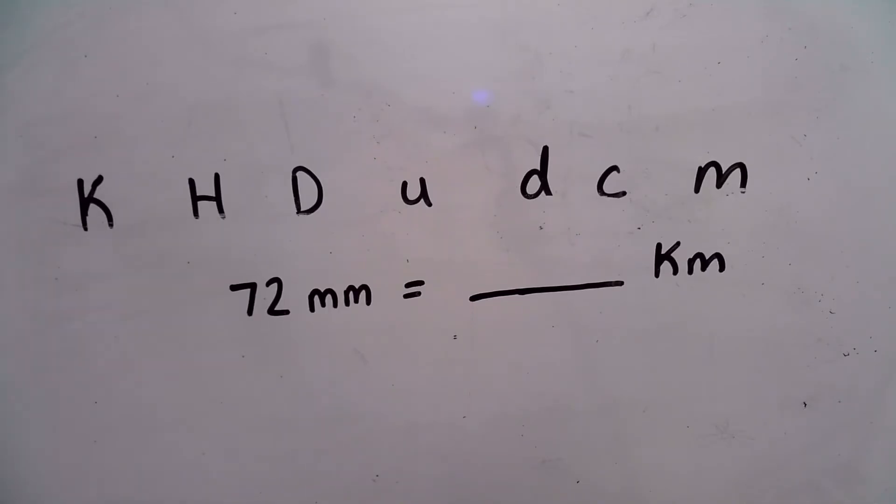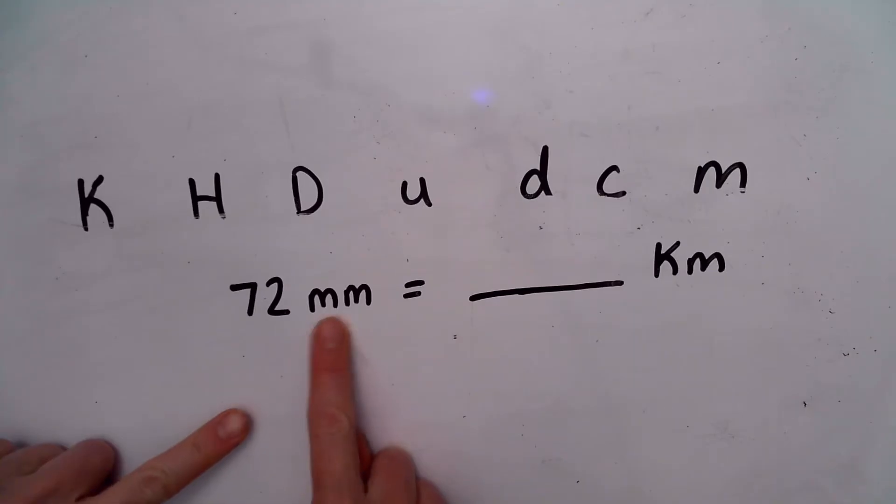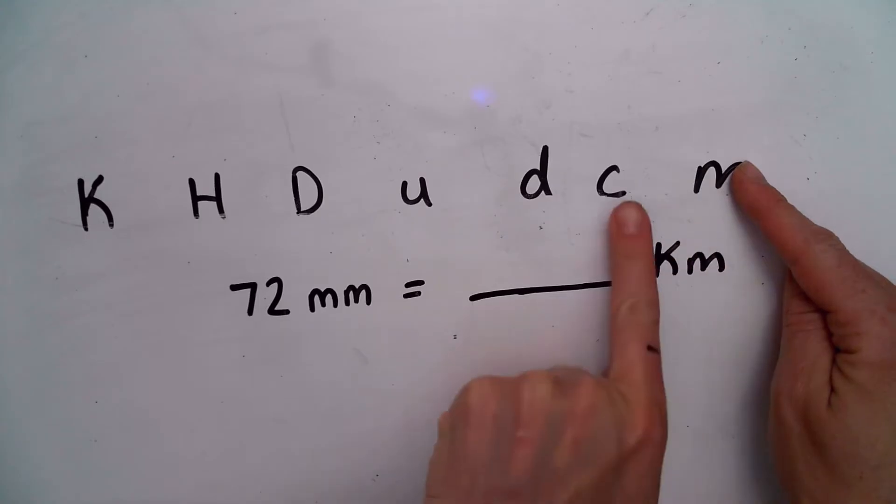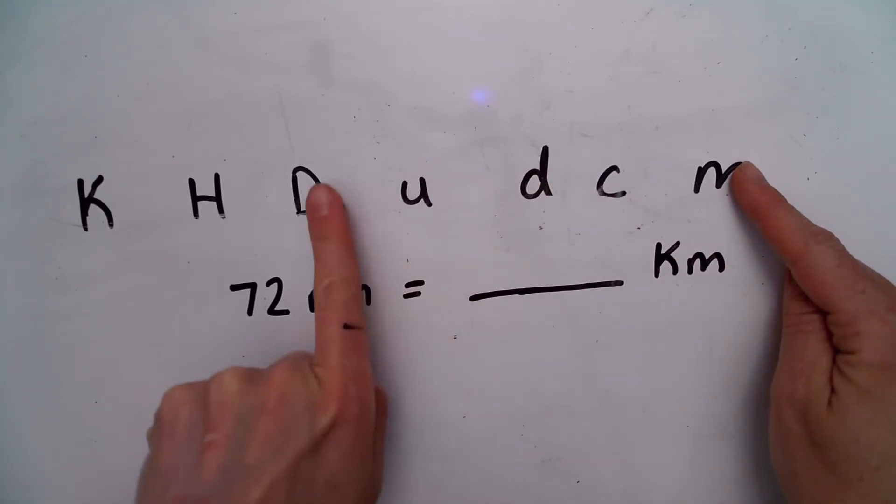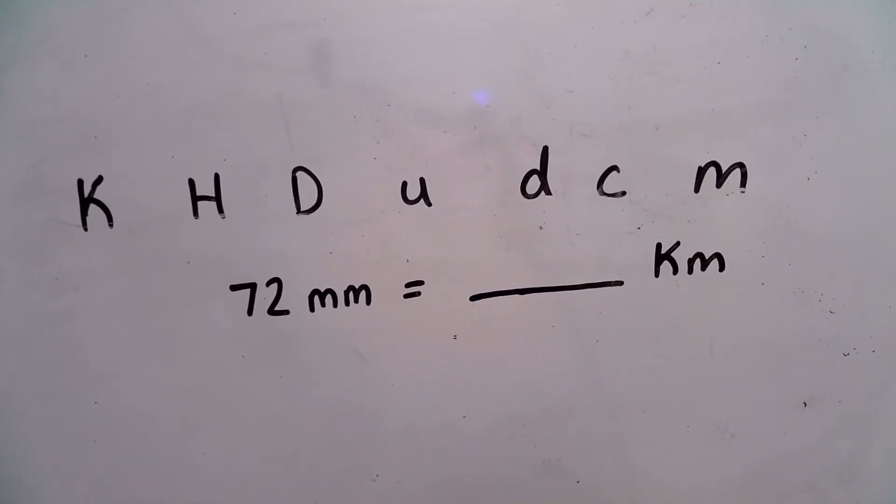How we solve this is we start both of our fingers on milli because that was our starting prefix. And then I move my finger to the left until I reach kilo and I count every time I move my finger. One, two, three, four, five, six. I move my finger six times to the left.